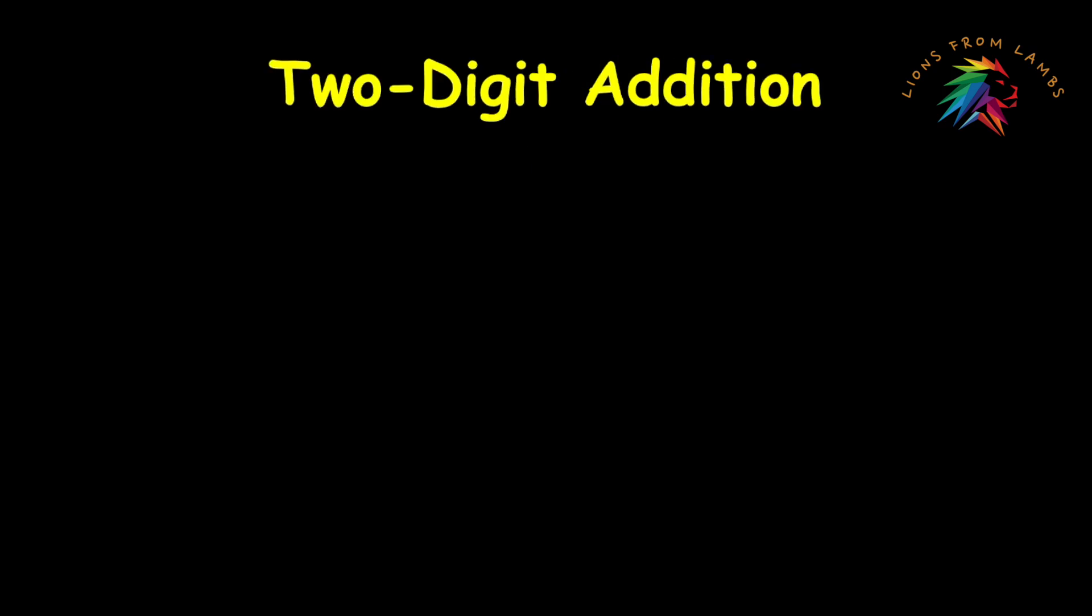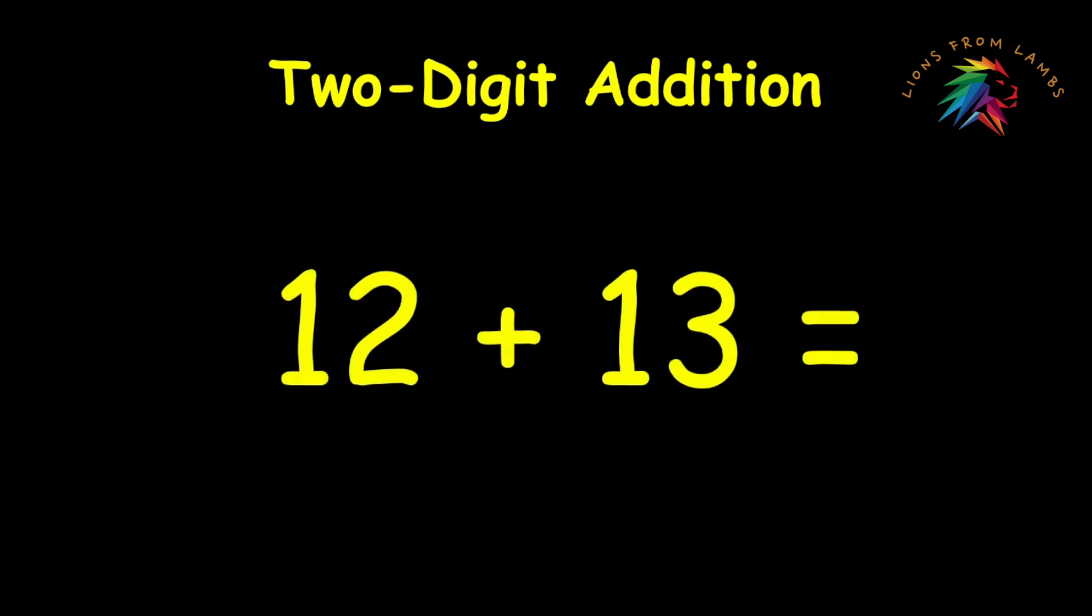All right so now that we know the basics let's move on to two digit addition. We're going to stick to a simple problem 12 plus 13. Now moving from one digit addition to two digit addition can be complicated at first but we can keep it under control. The most important thing is to keep track of our place values. Now in single digit numbers we only have the ones place but when we move into the two digit we have the ones and the tens place.